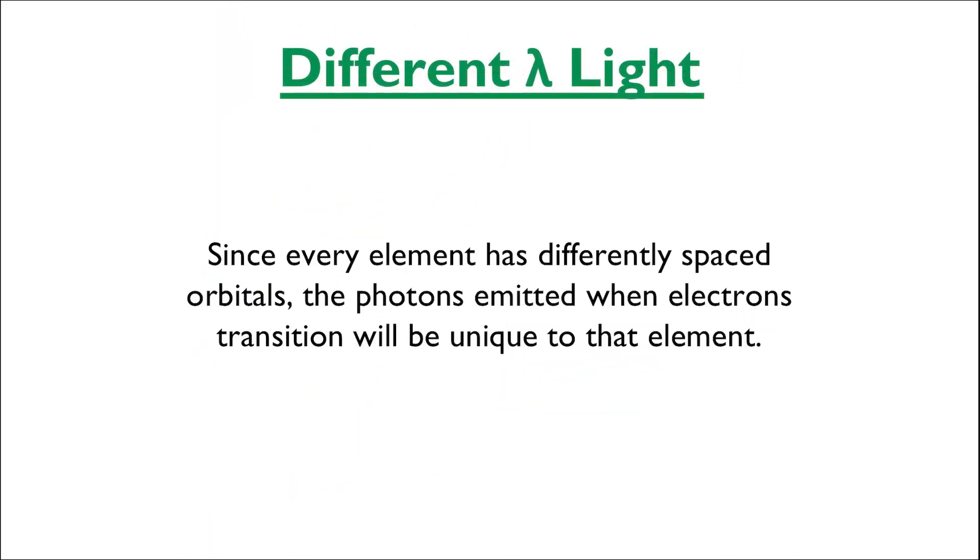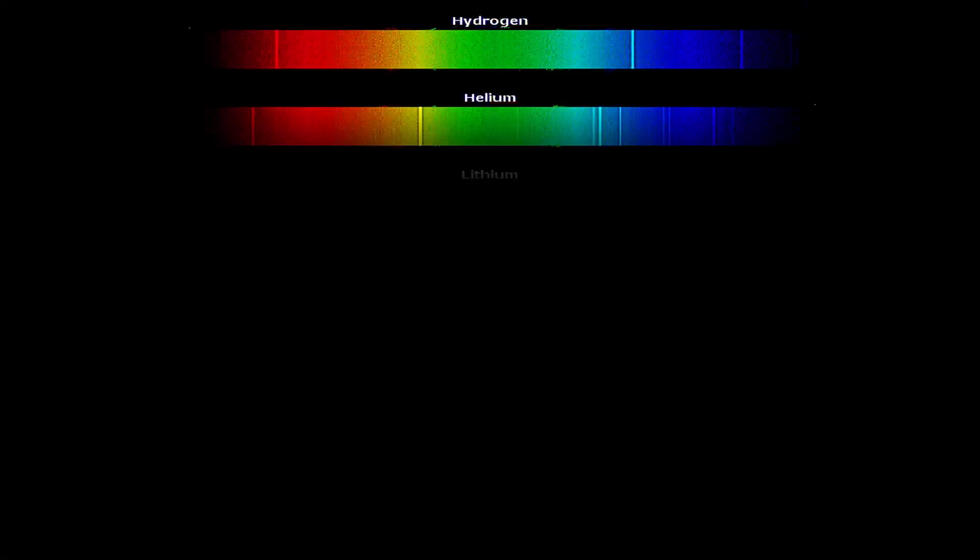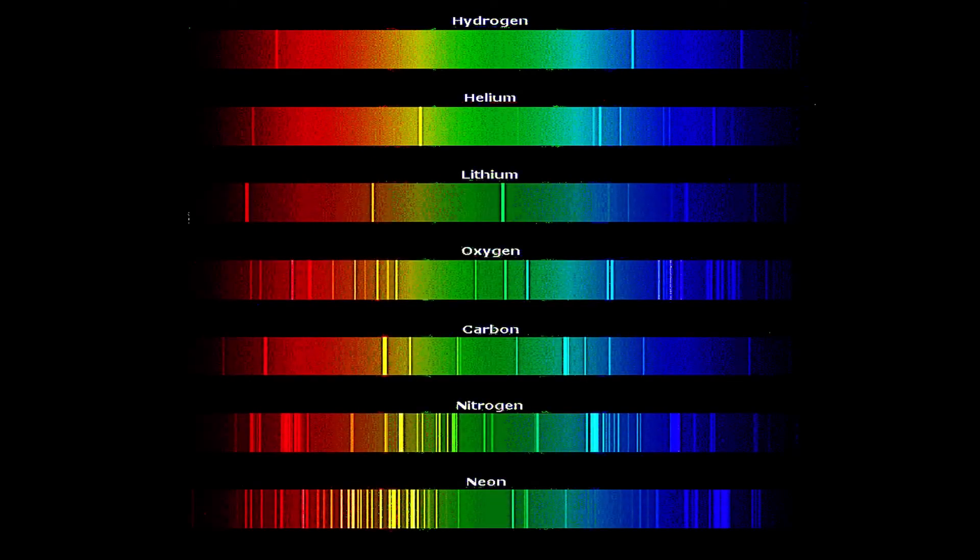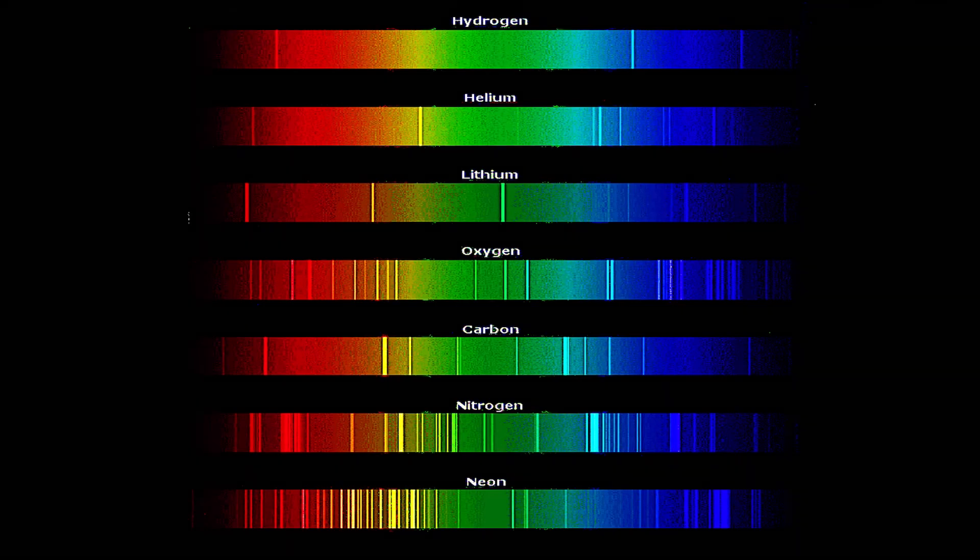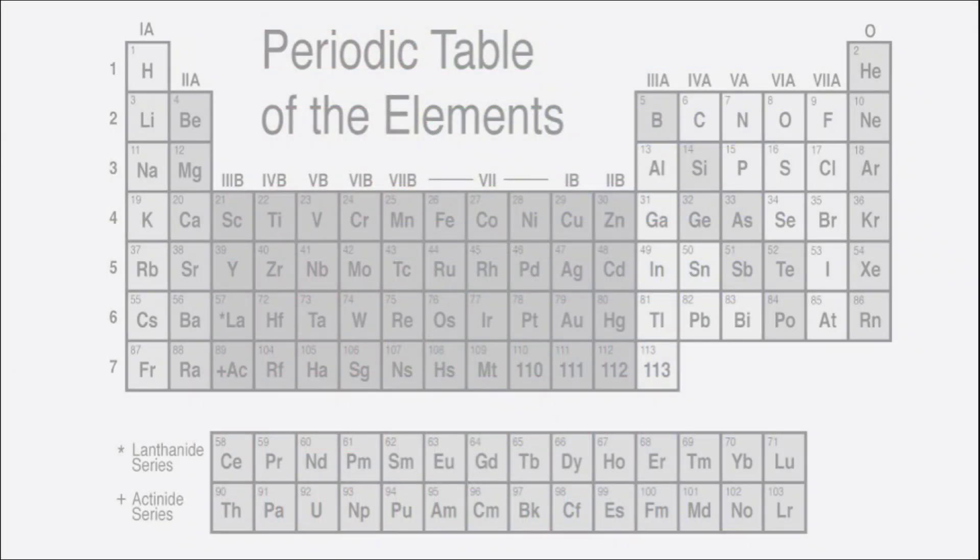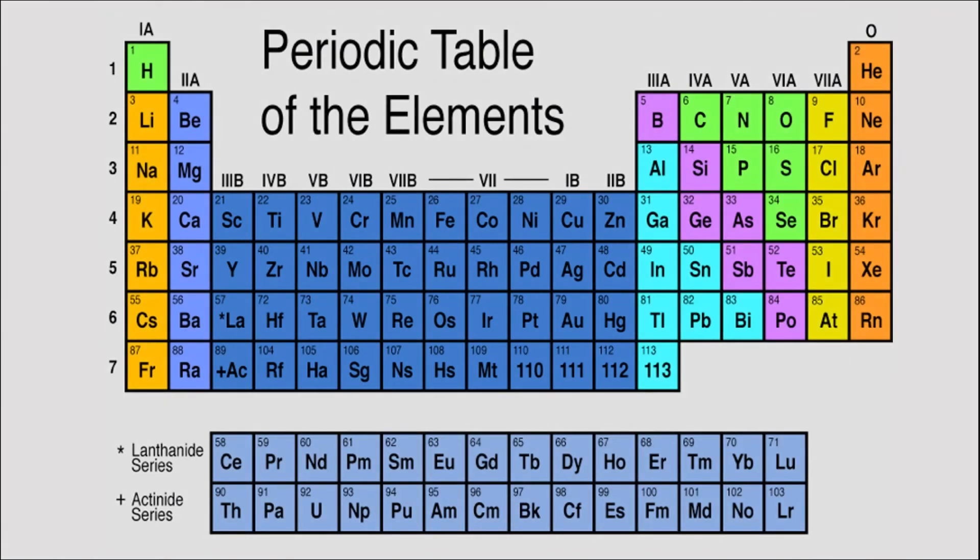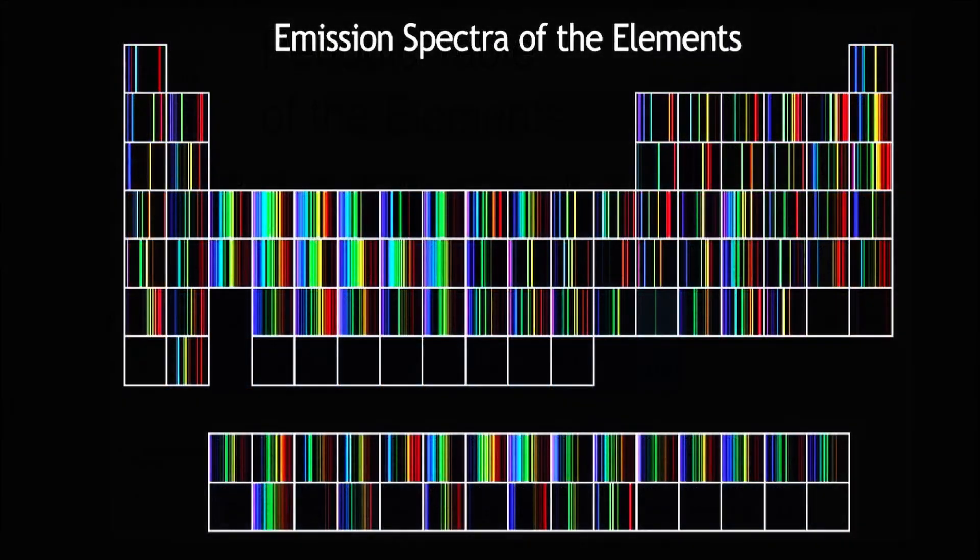If we continue through the rest of the elements of the periodic table, we'll come to see that every element has differently spaced orbitals, so the photons that are emitted from these electron transitions of each element will be in a pattern that is unique to that element. So each element's emission line spectrum is more or less the fingerprint of that element, with no two elements having the same exact set of emission lines. So if we were to look at the emission line spectrum of all of these elements, this is what we would see.